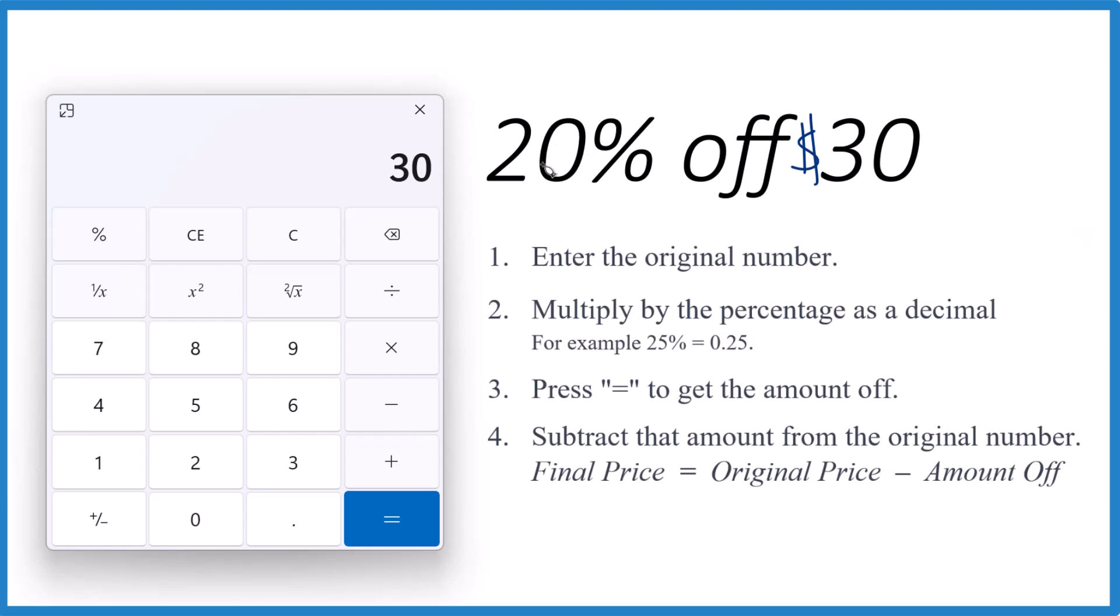So 20% becomes 0.20. You could just call it 0.2. So times 0.2, and we hit the equal sign. That gives us 6. So this number 6 right here, this is $6 since we're talking about dollars. That's 20% of 30. We're taking a portion of 30, 20%, and that gives us 6.